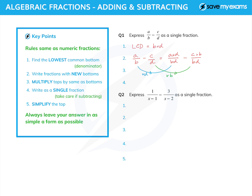So a over b minus c over d is all over bd, and we get ad minus cb. I like to write things in alphabetical order, so I'm going to call that bc. Step five doesn't need to happen here because the top is already as simple as it can be.